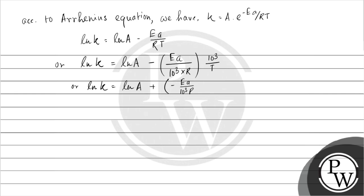Or lnk is equal to lnA plus minus Ea by 10 to the power 3 R into 10 to the power 3 by T. This is in the form of a straight line graph y equals mx plus c.